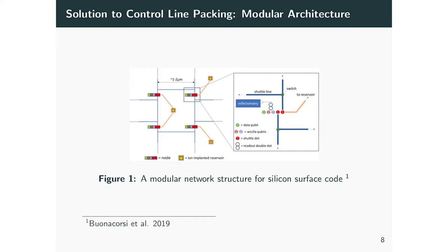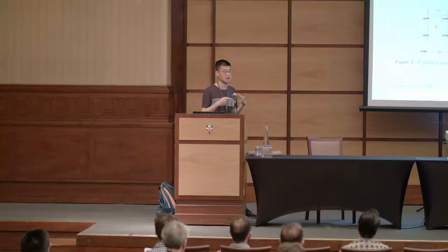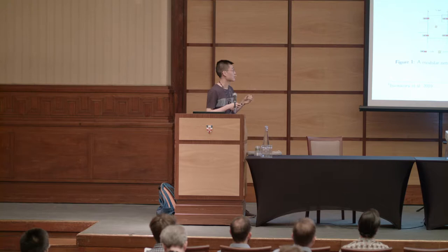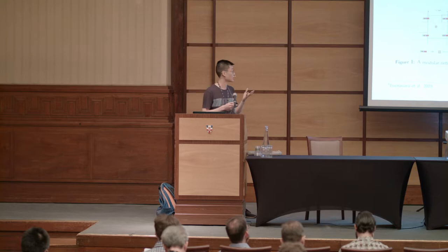The second way to deal with the control line packing problem is a modular approach, proposed by Bonadeo et al. They place each data qubit in a module and connect all data qubits using shuttling highways, where electrons are shuttled around to mediate inter-module gates between data qubits. This provides a lot of space — on the order of microns — for control lines, measurement devices, and related electronics. The problem is that shuttling electrons across modules requires more time, and the gate fidelity may be more limited compared to other approaches.